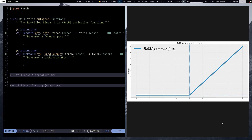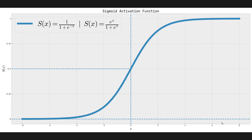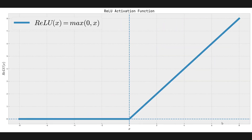In this video, I want to compare ReLU to the Sigmoid activation function, because I think that's a good activation function for drawing a comparison. We have the ReLU activation function here, with a plot for it. On a separate workspace, I have the Sigmoid activation function, so we can alternate between these two plots. ReLU of x is the max of zero and x. Any negative input is going to be mapped to zero, which we can see from the plot, and any non-negative input is going to be mapped onto itself.